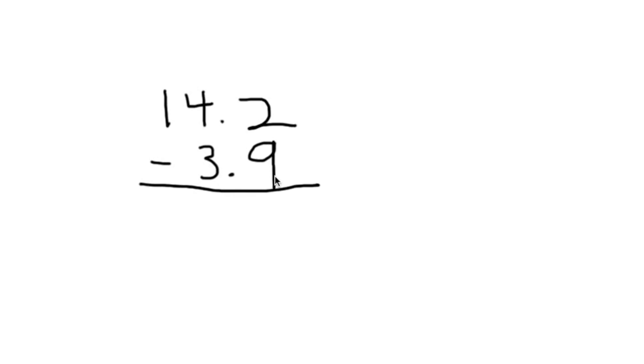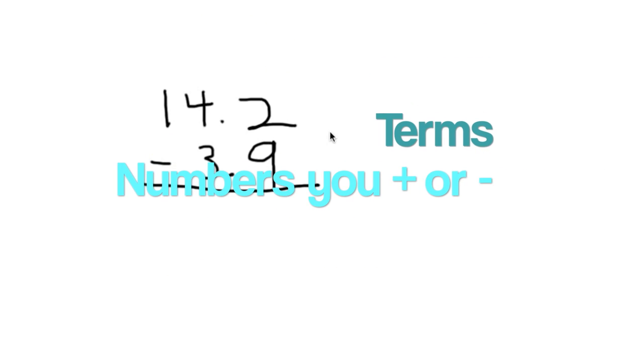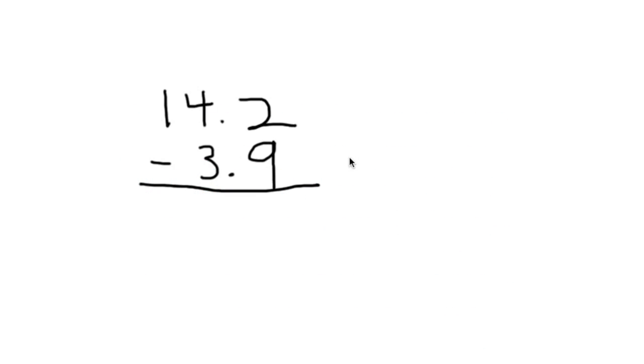Take this problem for example, 14 and 2 tenths minus 3 and 9 tenths. First you need to line up terms. Terms are numbers we add or subtract.